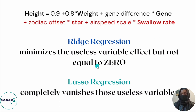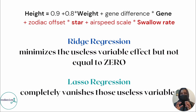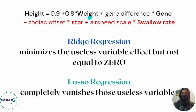As compared to Lasso Regression, because there are absolute values with lambda, eventually the coefficients will not just approach zero asymptotically — they will become exactly equal to zero. And when you predict height using Lasso Regression, useless variables like star sign and swallow rate will be eliminated, leaving only useful variables like weight and genes.